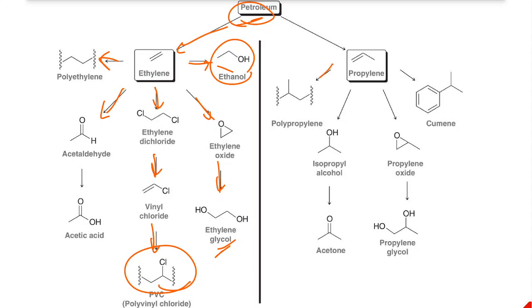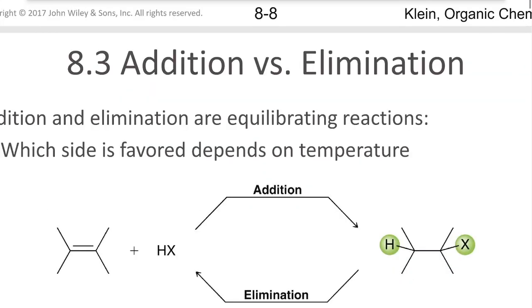Over here from propylene, we can get polypropylene, which is a plastic. Cumene, which is also important. And then we have propylene oxide, which is used, again, for resins. Isopropyl alcohol, acetone, all of these different. And even propylene glycol, which is an antifreeze that's less toxic. So all of these are important industrial chemicals that come generally from petroleum.